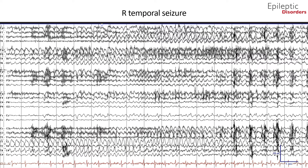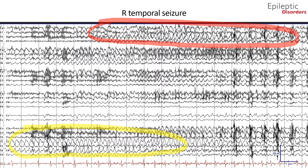In the next page of this seizure shown in bipolar montage, there is evolution in frequency of the sharp waves to 4 to 5 hertz theta activity, as well as evolution in amplitude and morphology to include more spiky components. Halfway through the epoch, there is spatiotemporal evolution with involvement of the left frontal and temporal regions. Additionally, highlighted in blue in the first two seconds of the page, there is muscle myogenic artifact representing clinical manifestations of the seizure. Also noted in the EKG channel below is a gradual increase in heart rate.